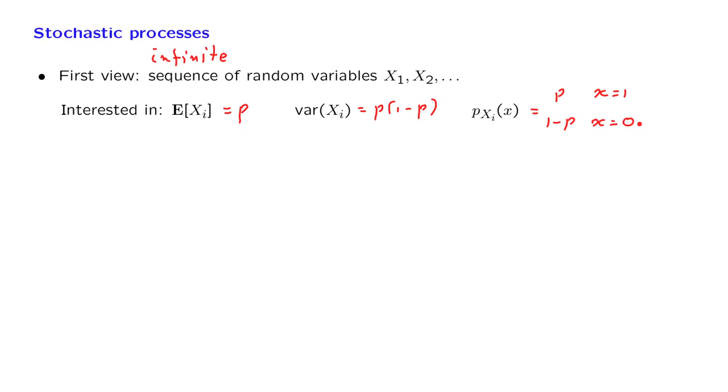But this is not enough. We also need to know how the different random variables are related to each other. And this is done by specifying, directly or indirectly, the joint distribution, the joint PMF or PDF of the random variables involved.